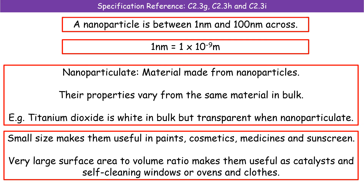In terms of what we can use nanoparticles for — they're incredibly small, which makes them very useful in things like paints, cosmetics, and sunscreens. A key area of active work is using them as catalysts, because their very large surface area to volume ratio makes them incredibly effective. They're also used in self-cleaning windows, which are a genuine thing — a film containing nanoparticles is applied to the surface so the dirt doesn't stick to the windows, removing the need to send people up ladders or cradles to clean them.